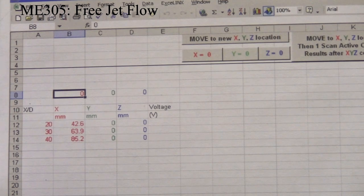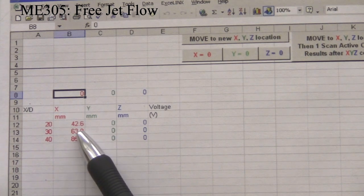Currently the pitot tube is at zero, zero, zero. To go to any new location you must always highlight the x-coordinate of that location.